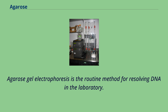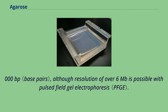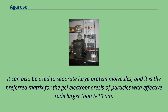Agarose gel electrophoresis is the routine method for resolving DNA in the laboratory. Agarose gels have lower resolving power for DNA than acrylamide gels, but they have a greater range of separation, and are therefore usually used for DNA fragments with lengths of 50 to 20,000 bp, although resolution of over 6 megabases is possible with pulsed field gel electrophoresis. It can also be used to separate large protein molecules, and it is the preferred matrix for the gel electrophoresis of particles with effective radii larger than 5–10 nanometers.